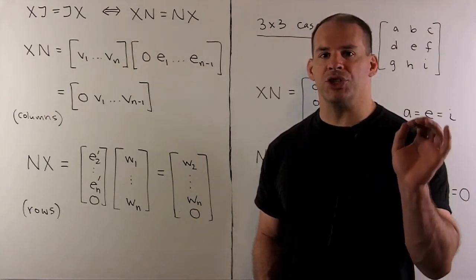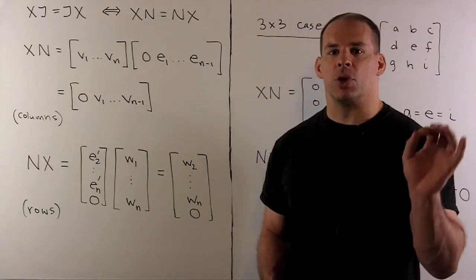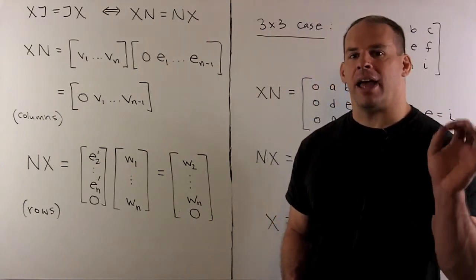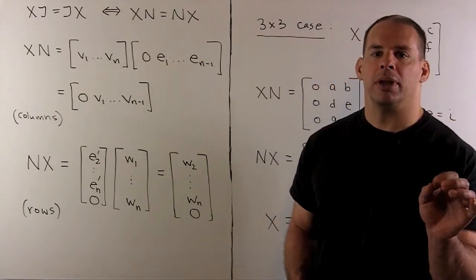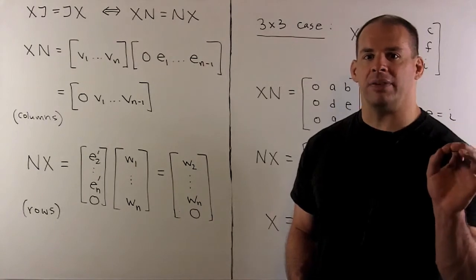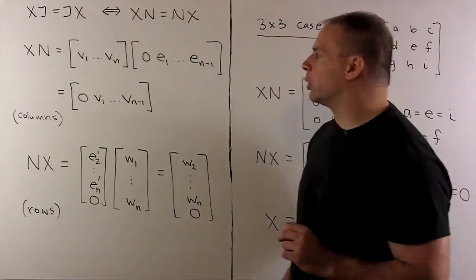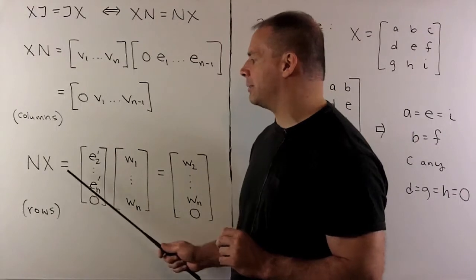To see the equality, suppose X and J commute. That statement is equivalent to saying that X and N commute. Okay? We can remove C times the identity from the equation. So I want to see what happens when we multiply X times N and N times X.